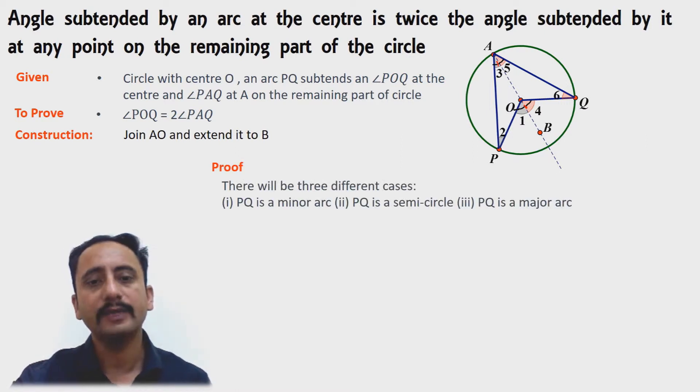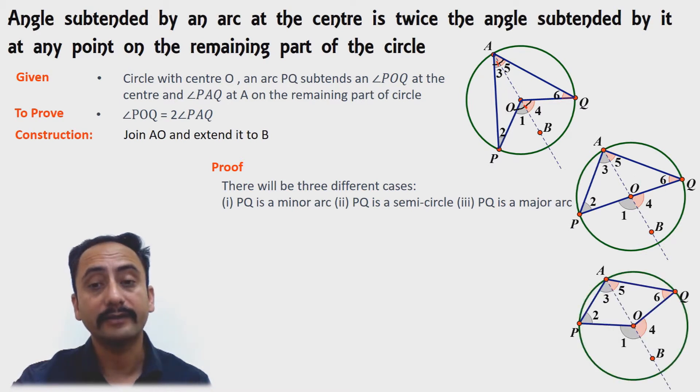The first one: PQ is a minor arc. The second: PQ is a semicircle. And the third: PQ is a major arc. Here are the figures; in the first figure, PQ is a minor arc.